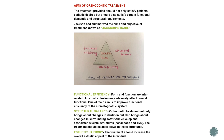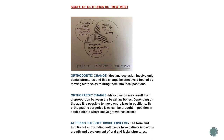The scope of orthodontic treatment: three changes can happen because of orthodontic treatment — orthodontic change, orthopedic change, and altering the soft tissue envelope. Orthodontic change is a change in the position of the teeth; orthopedic is when there is a problem with the bones; soft tissue envelope refers to the musculature. Most malocclusions involve only dental structures and can be effectively treated by moving teeth into ideal position.